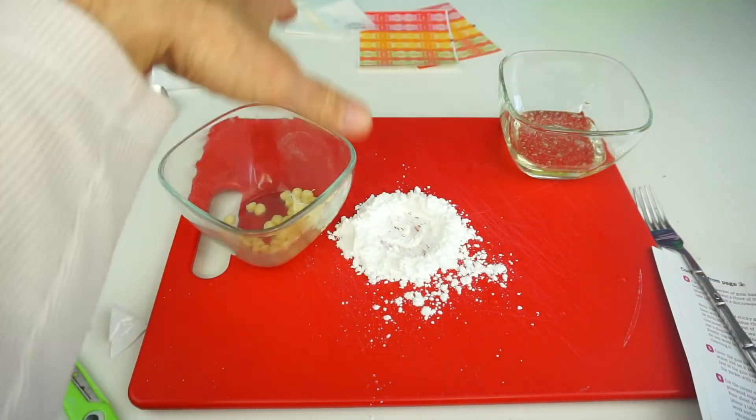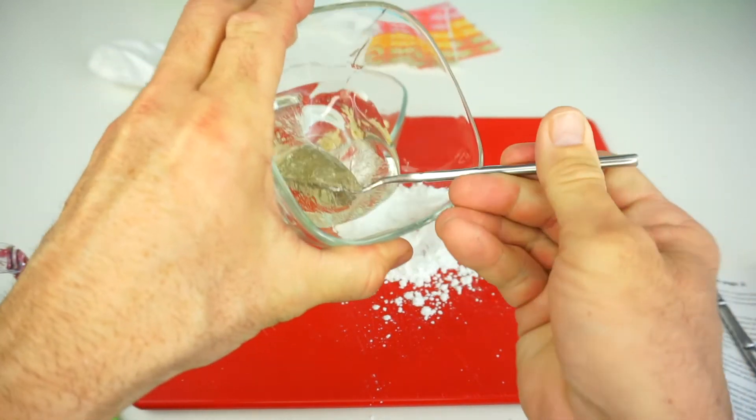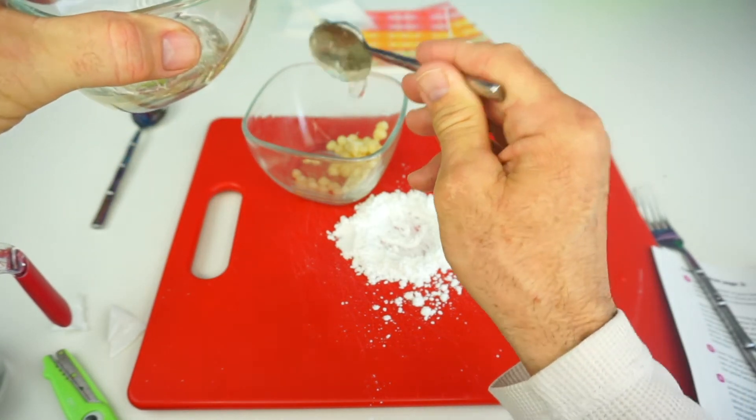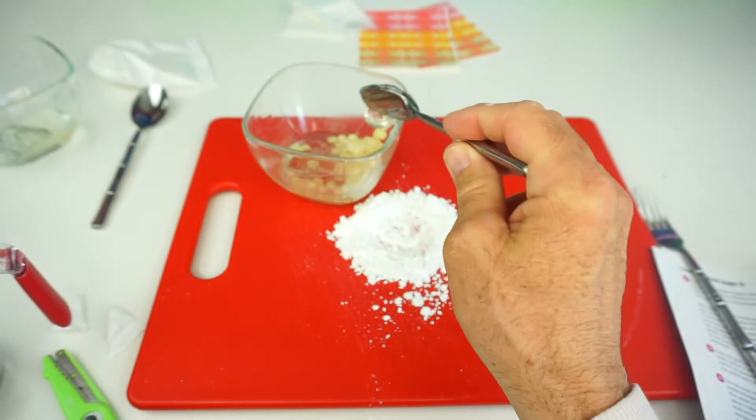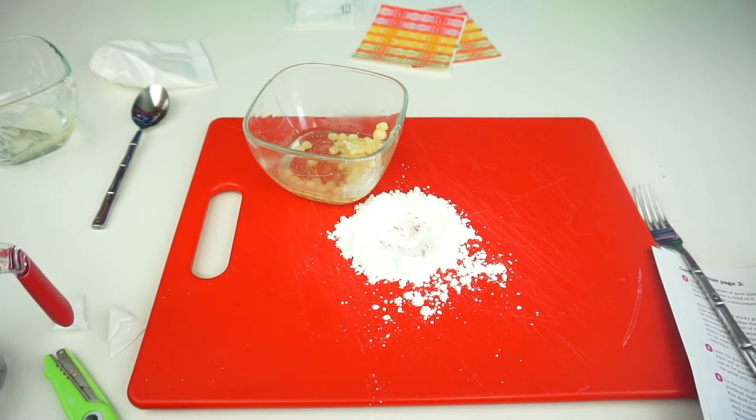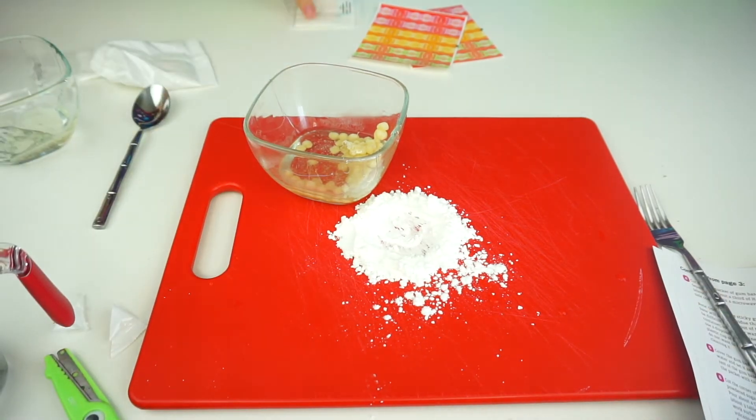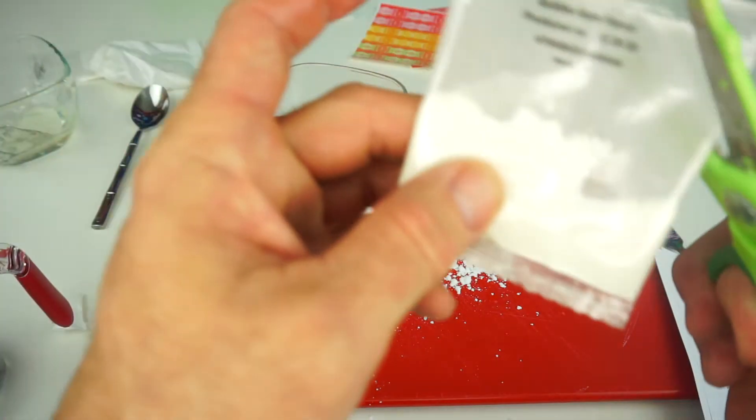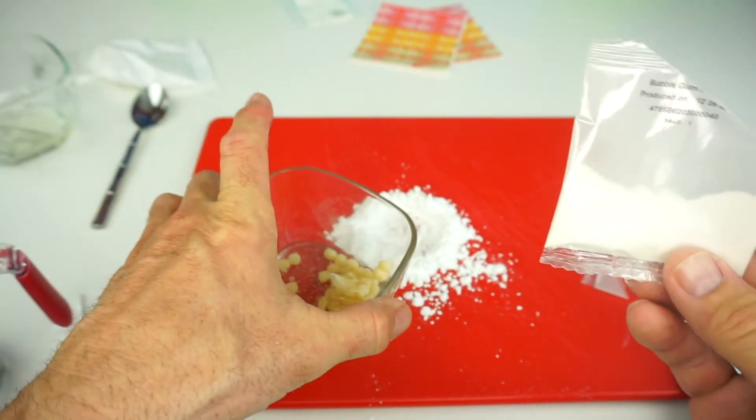The next step is to add corn syrup to the gum base. And it says two tablespoons. So let's take our corn syrup approximately. The next thing we're going to do is open up a flavor packet and add it to the mix. We're going to open bubble gum flavor. Cut off the side and then add the powder to the mix.